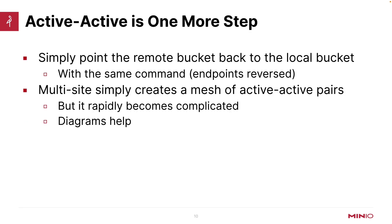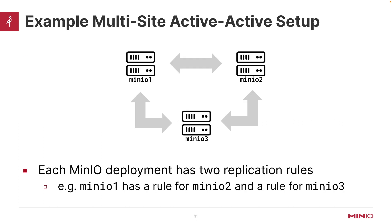To do an active-active setup, it's literally just one more step — I need to reverse the endpoints and point the remote bucket back to the local bucket using the same command. Multi-site is going to create a mesh of these active-active pairs, but it does rapidly become complicated to keep track of. Diagrams can help. So let's say I have three servers: MinIO1, MinIO2, and MinIO3, and each of them is going to need to have two replication rules for the bucket. My bucket on MinIO1 needs a replication rule to MinIO2 and a replication rule to MinIO3. Similarly, MinIO2 has to have the same thing. Basically, you have a lot of rules you're going to have to write. That is how you set up multi-site active-active bucket replication.